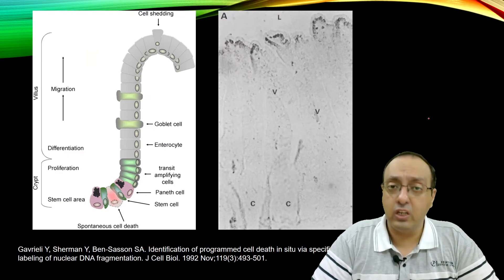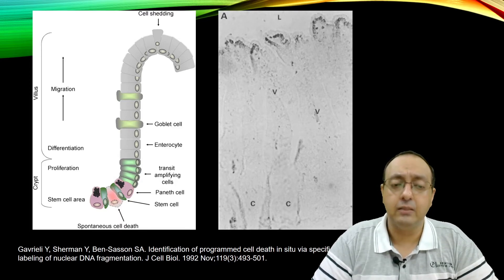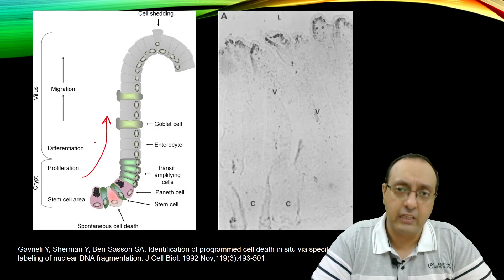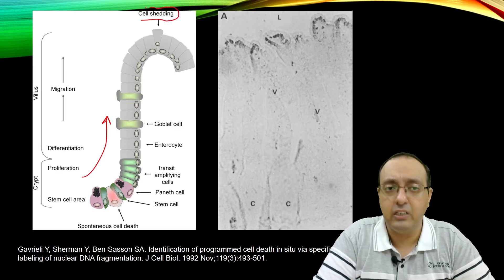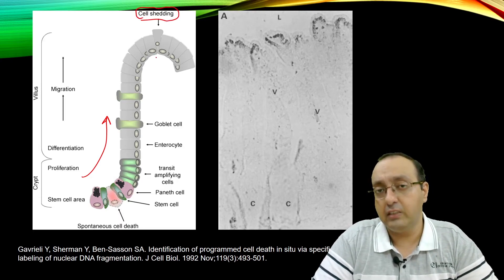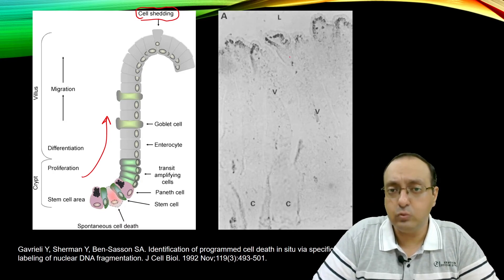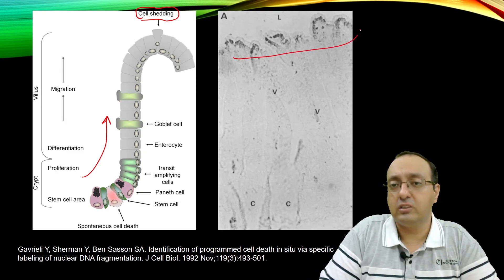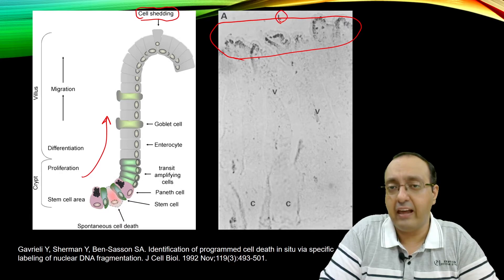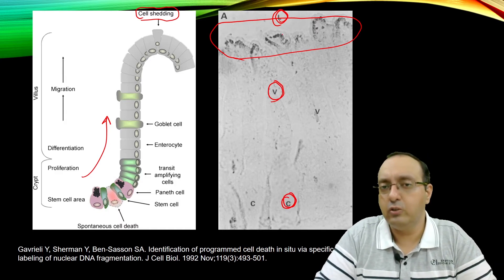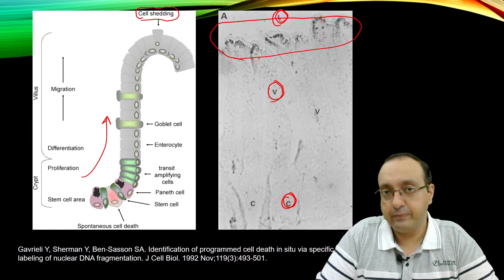Here we can see the original results from the 1992 paper. Cells of the small intestinal epithelium move from the crypt area to the villus, constantly moving in that direction and shedding into the lumen of the intestine. Before shedding, there is apoptosis, and this was detected by TUNEL assay. You can see the lumen (L) of the small intestine, the intestinal villi, the crypt, and the apoptotic cells labeled by the assay.